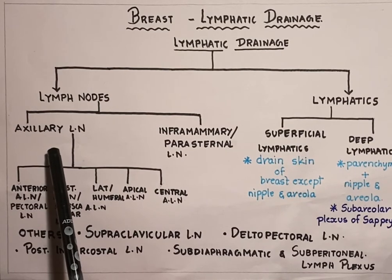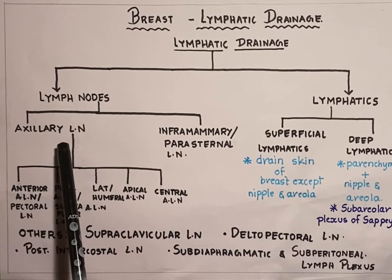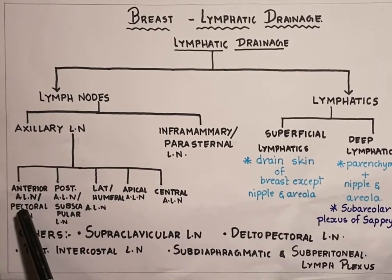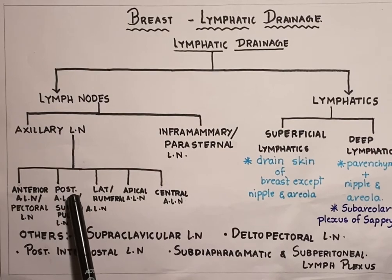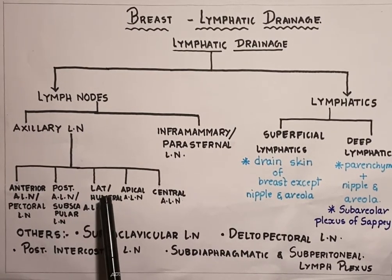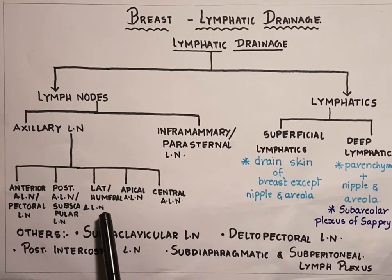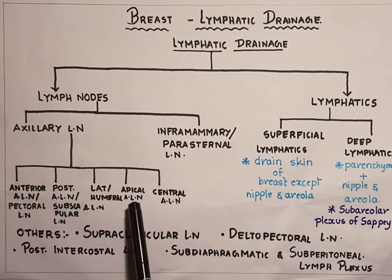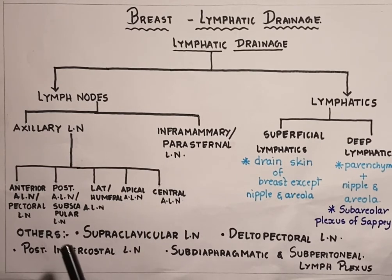First, coming to the axillary group of lymph nodes. As the name suggests, the axillary group of lymph nodes are situated in the axillary region. They are further divided into five groups: the anterior or pectoral group, the posterior or subscapular group, the lateral or humeral group, the central axillary lymph nodes, and finally the apical axillary lymph nodes.